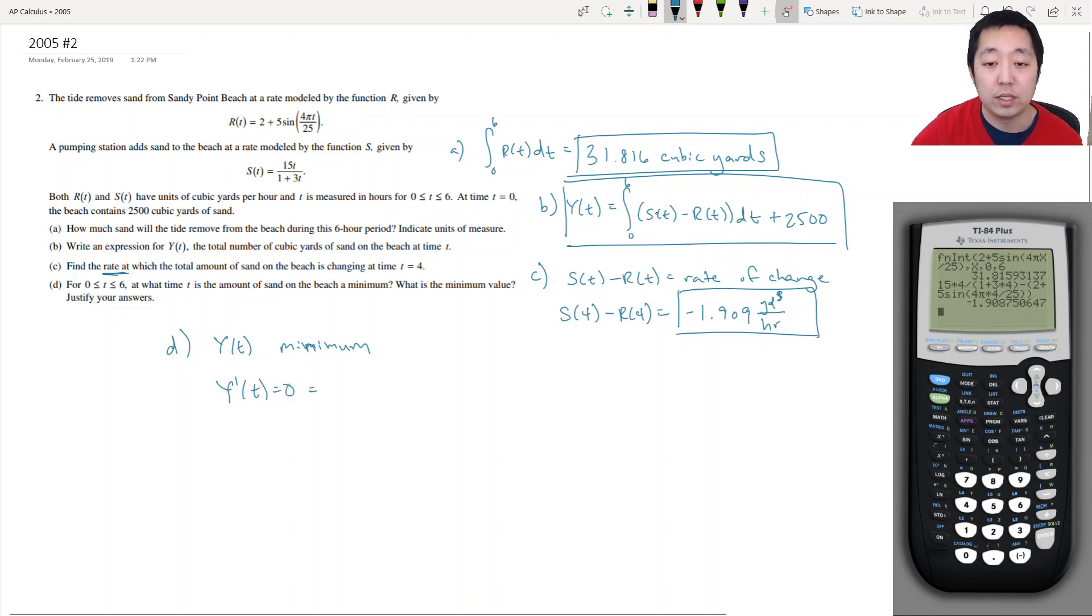Y prime of T was actually, oh yeah, this is supposed to be T up here, not 6. And technically it's better to use different letters. So I'm going to fix this. We would say integral from 0 to T of S of X minus R of X DX. Just use any other letter than T in the integrand because you're using T up here already. So by fundamental theorem of calculus, this derivative is just simply S of T minus R of T. So I want to know when S of T is equal to R of T.